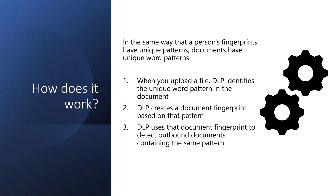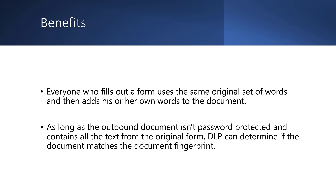So how does this thing work? In the same way that a person's fingerprints have unique patterns, documents also have unique word patterns. When you upload a file, the DLP service identifies a unique word pattern in the document, then creates a document fingerprint based on that pattern, and uses the document fingerprint to detect outbound documents containing the same pattern. Anyone who fills out a form uses the same original set of words and adds their own words to the document. As long as that outbound document isn't password protected and contains all the text from the original form, DLP can determine if the document matches the document fingerprint.